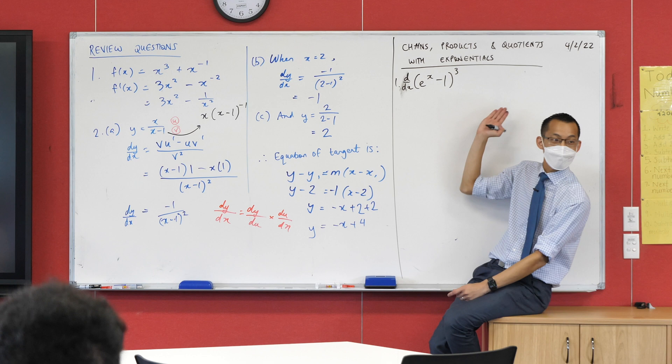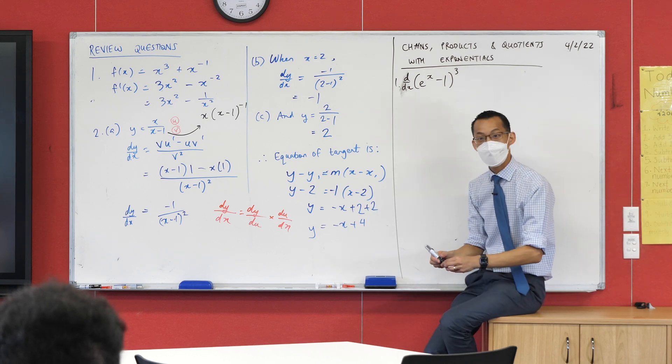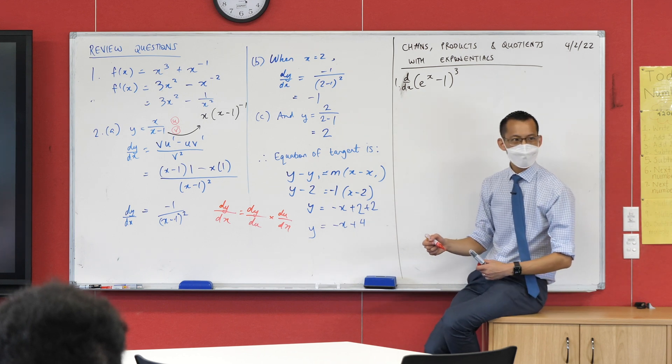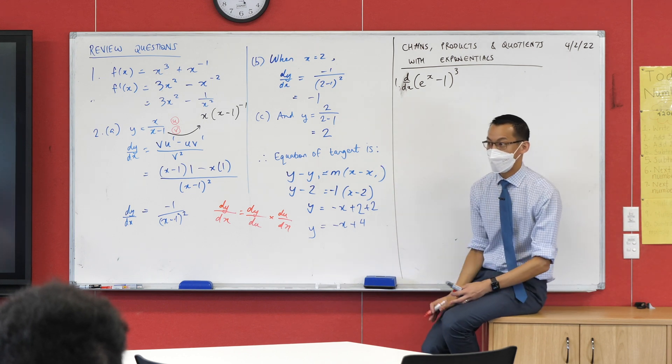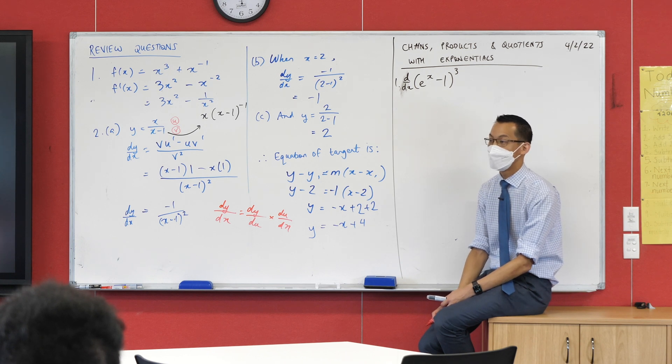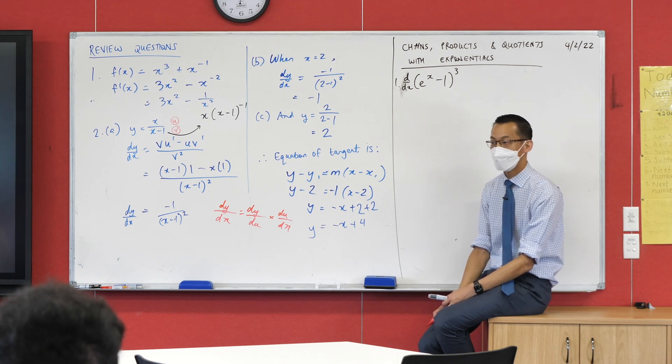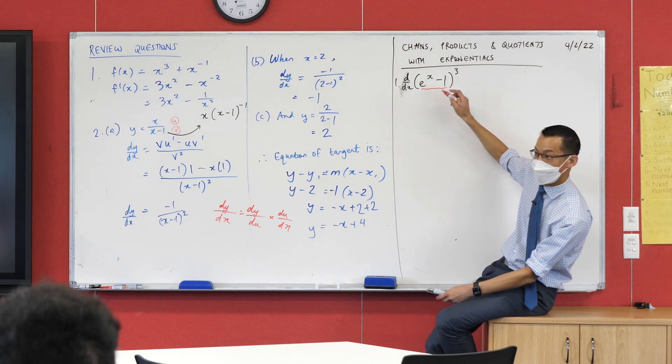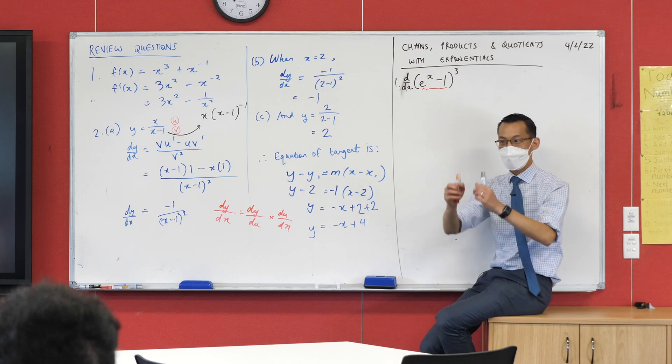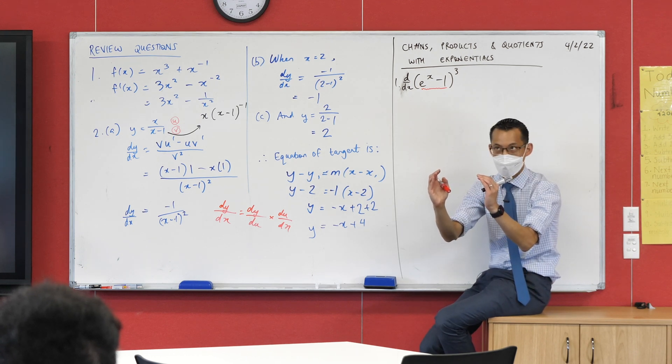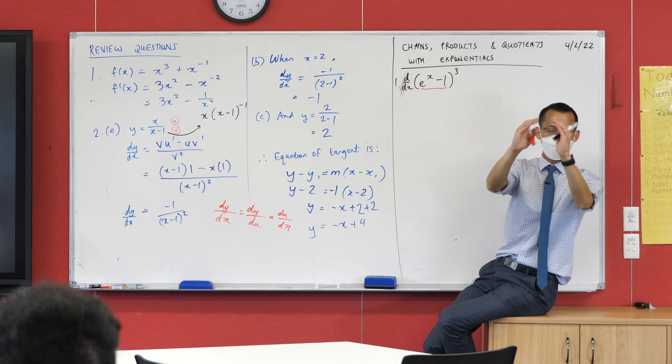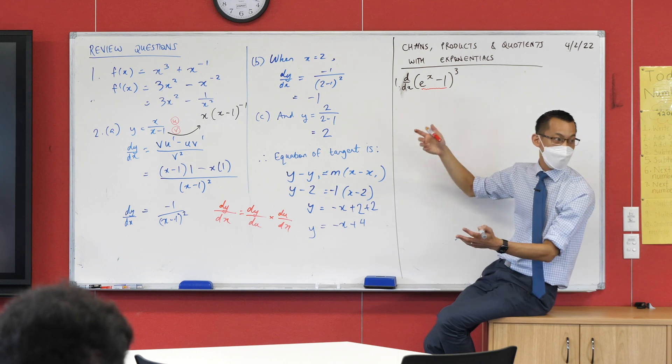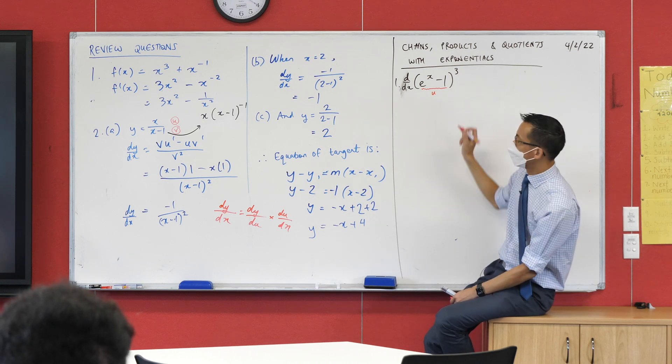If I were to go through do that long working, my first line of working might be let u equal—and I'm going to choose something in here. Any suggestions? Michael, do you want to give a note? Okay, so this e to the (x minus one) in brackets that you just mentioned—this is a function all by itself, and then we're doing something else to that, we're cubing it. So remember, it's what we call the function of a function.